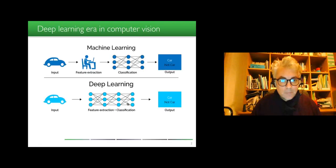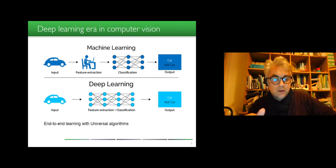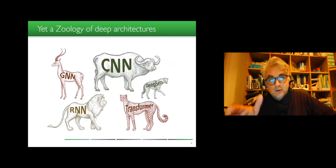Hi everyone. We live in a deep learning era in computer vision where we all have access to end-to-end learning with universal algorithms. Yet there is a zoology of deep architecture depending on the type of data that you are using.